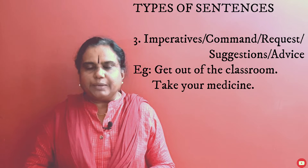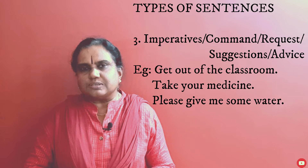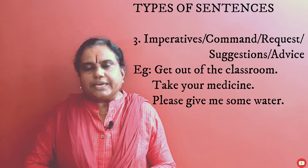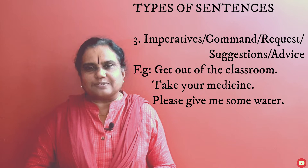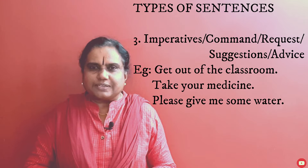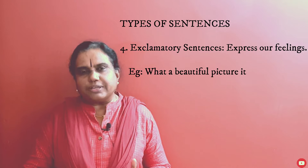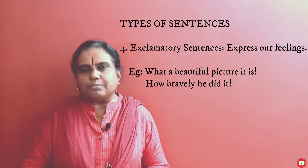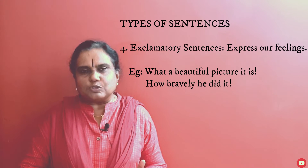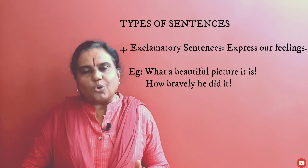The third type is imperatives — command, request, suggestions, advice. For example: 'Get out of the classroom,' 'Take your medicine,' 'Please give me some water.' The fourth type is exclamatory sentences, which express feelings. Interjections are also part of speech — feeling words like 'wow' or 'oh'.